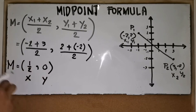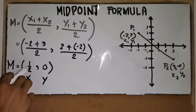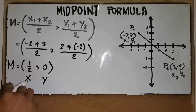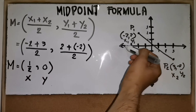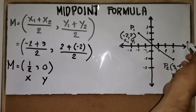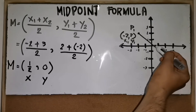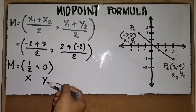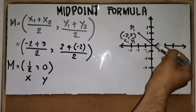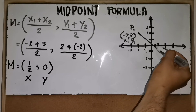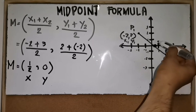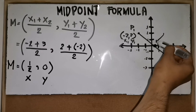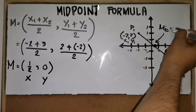To find where this midpoint is located on the graph: the x coordinate is 1.5, so we locate that on the x axis, and the y coordinate is 0, so our midpoint is located right there on the graph.